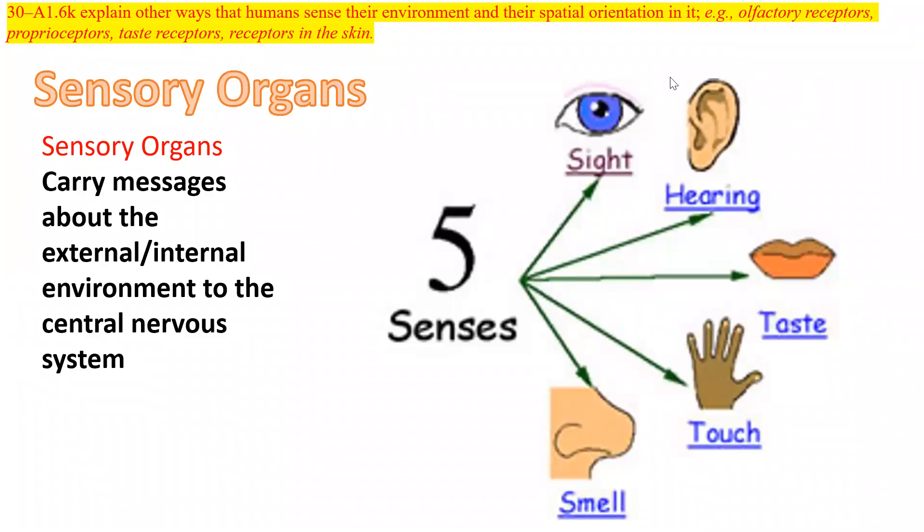So we're going to look at the senses. Explain other ways that humans sense their environment, spatial orientation. Let's take a look at this idea of sensory organs. They carry messages about the external or internal environment to the central nervous system. There's five senses.